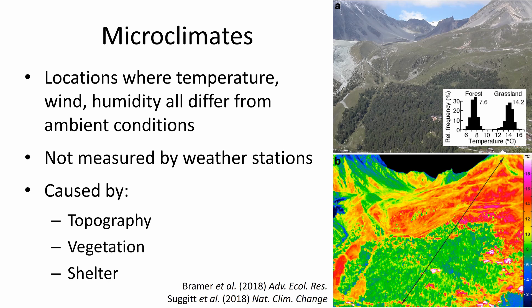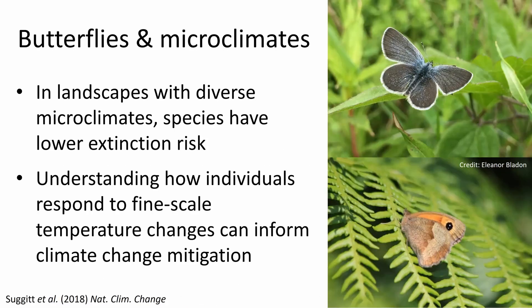This kind of diversity across the landscape at a local scale could be really important for butterflies, other insects, and indeed all animals for finding favorable temperatures in a changing climate. Previous work has shown at a broad scale that landscapes with diverse microclimates actually have a lower risk of species extinction, and it's important for us to understand how individuals respond to these fine-scale temperature changes so that we can start to inform climate change mitigation strategies for nature reserves.